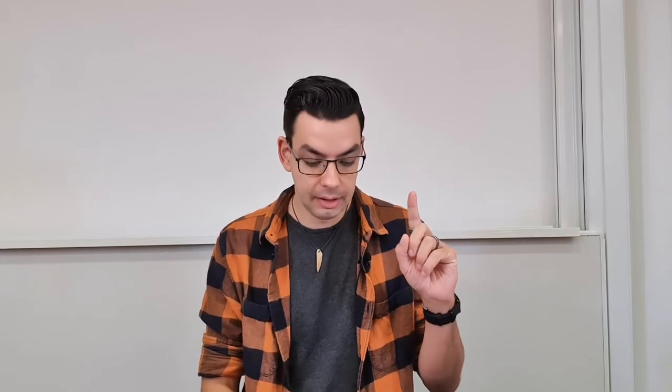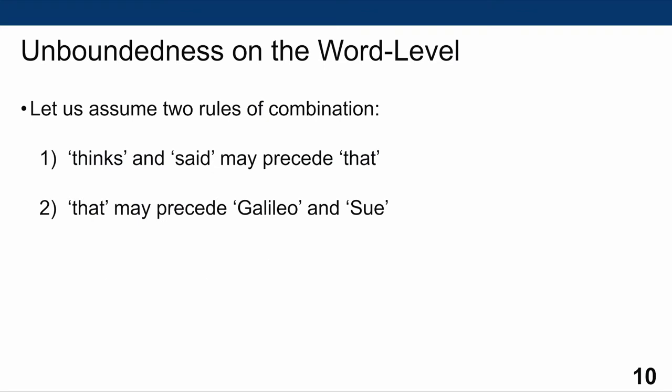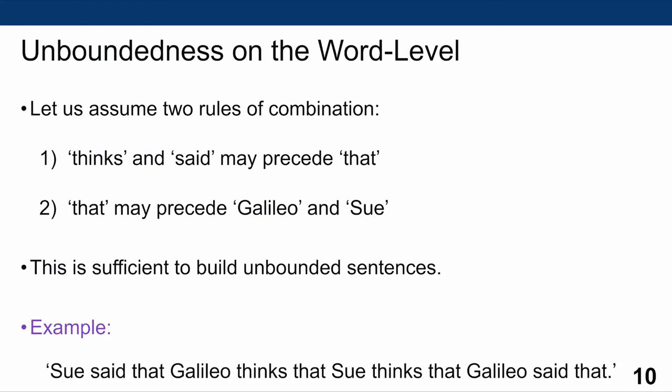Let's see how the simple word-level account can build unbounded sentences. We assume two rules of combination: first, 'thinks' and 'said' may precede the word 'that'; second, 'that' may precede the words 'Galileo' and 'Sue.' With this, I can build unbounded sentences — for example, 'Sue said that Galileo thinks that' or 'Sue thinks that Galileo said that.' I only need knowledge of individual words and their order of precedence to construct these infinite sentences.